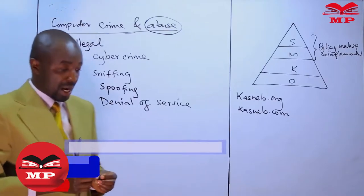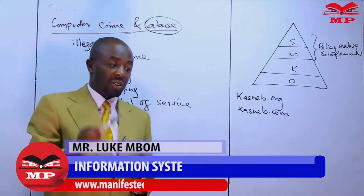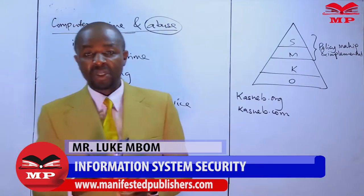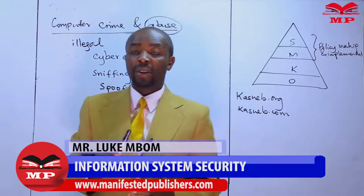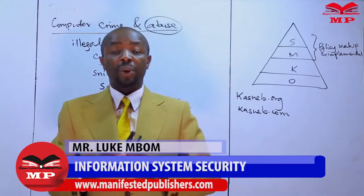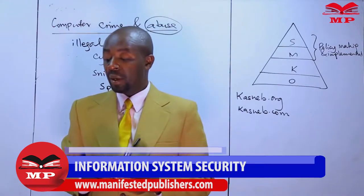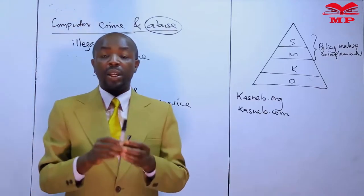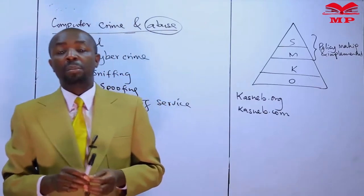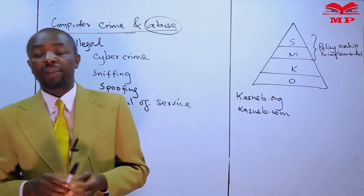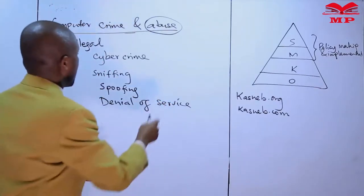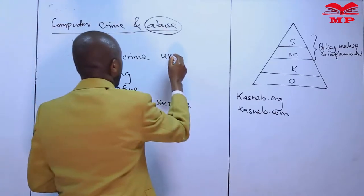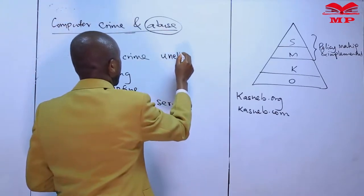Let's look at abuse. How do we differentiate crime from abuse? Computer abuse talks about the use of the computer system to carry out tasks that are not illegal, but they are unethical. The tasks are not illegal, but they are unethical.